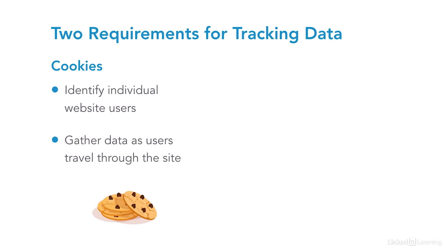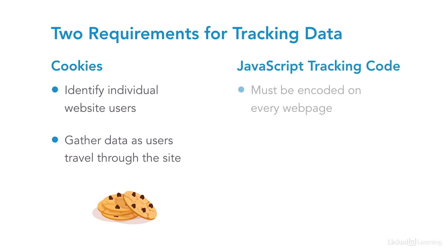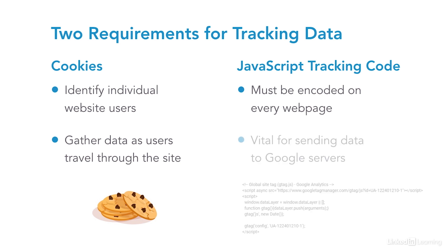If folks have blocked cookies through their browser, then Google Analytics can't track them, and it won't work for that particular user. Second, you need to copy the JavaScript tracking code, also known as a global site tag, to your site so that it runs in the user's browser.